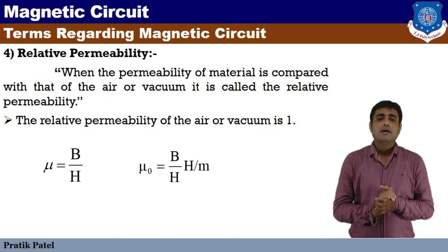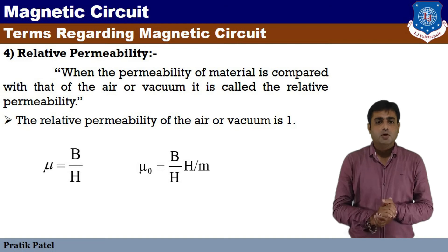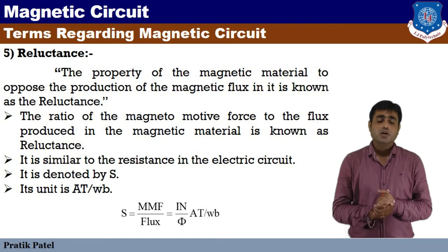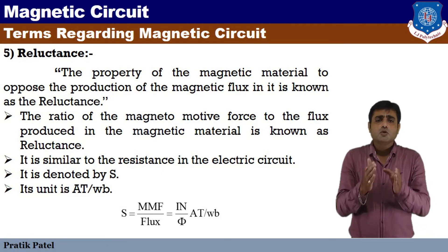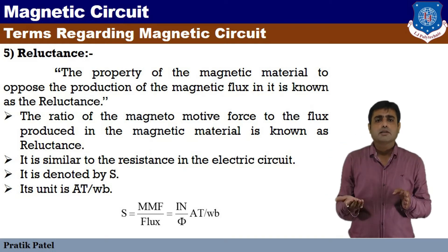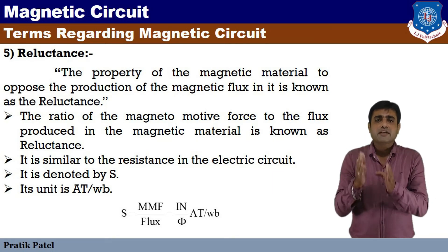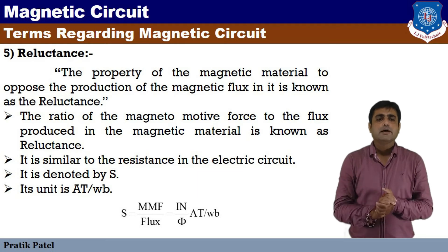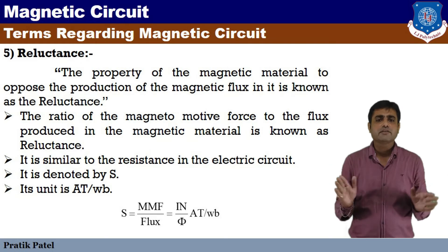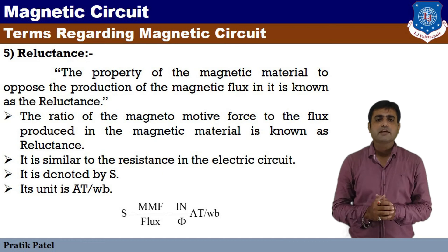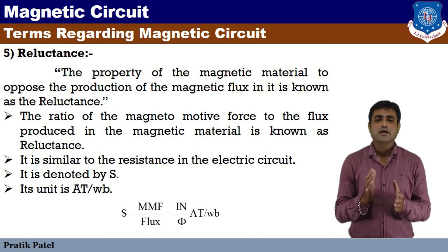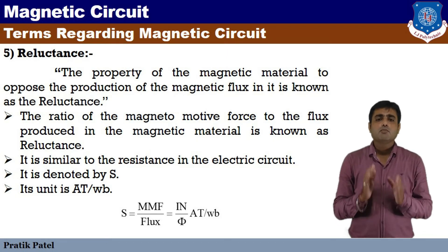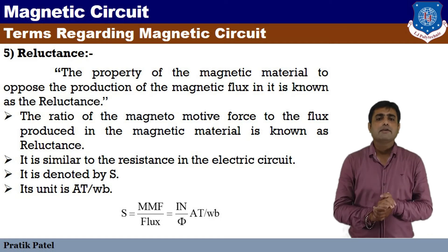The permeability equation is: mu is equal to B divided by H, that is magnetic flux density upon magnetic field strength. Next, reluctance: the property of a magnetic material to oppose the production of magnetic flux in it is known as reluctance. This is the opposite of permeability.